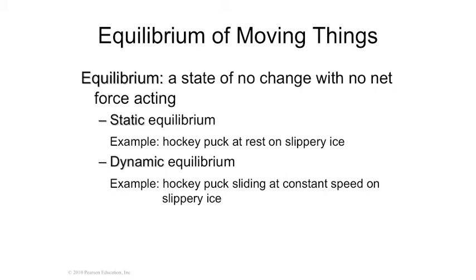So equilibrium can be two types. Static equilibrium means stopped — all of the forces are opposed and the tug-of-war rope is not moving. Dynamic equilibrium means, for example, two teams on a flatbed truck going five miles an hour down the street and tug-of-warring. If they're perfectly balanced, there's no acceleration left or right, but the entire rope and both teams are moving. A can rolling across the table is in dynamic equilibrium.